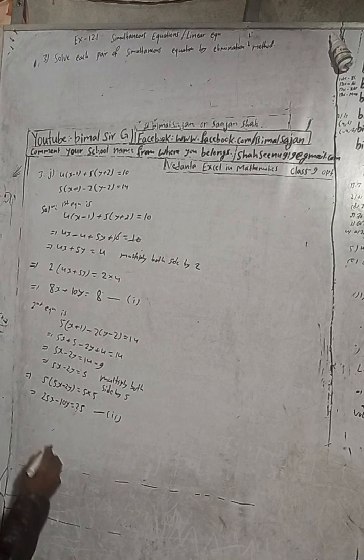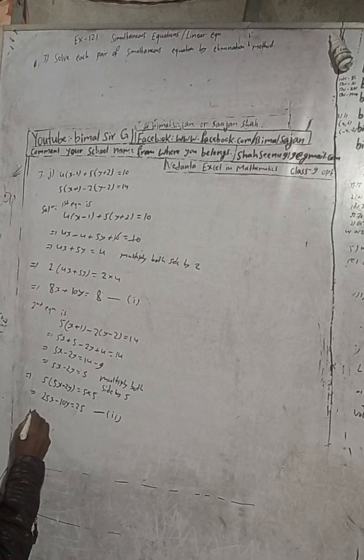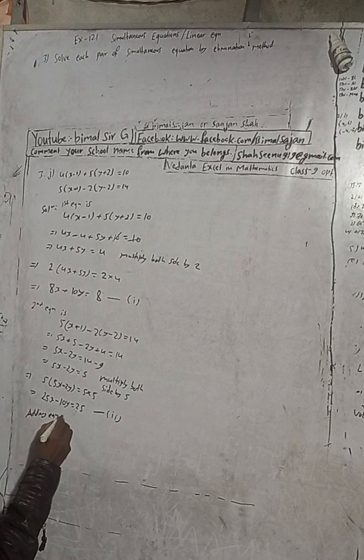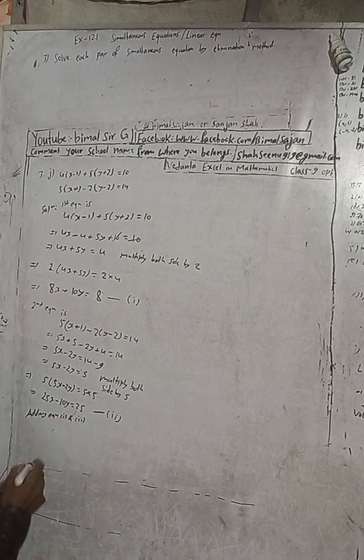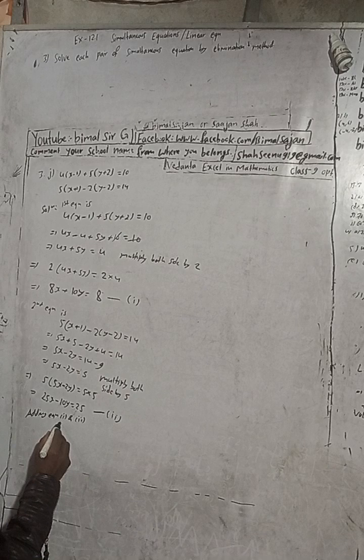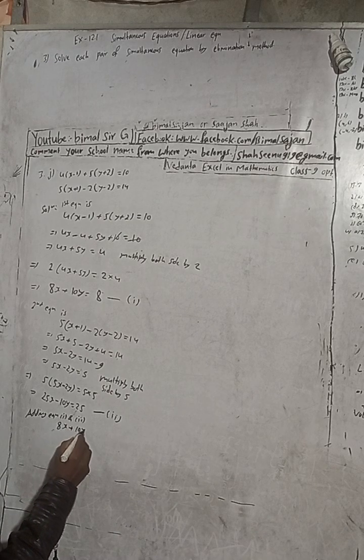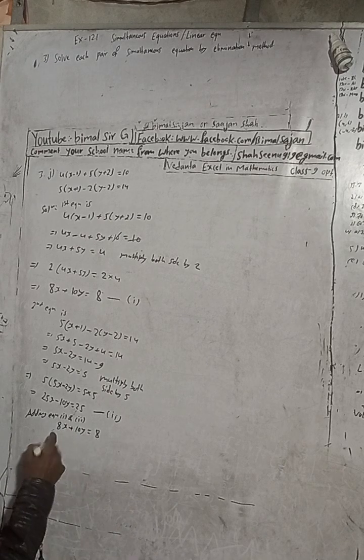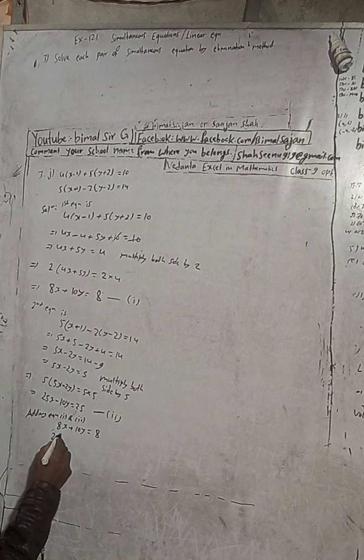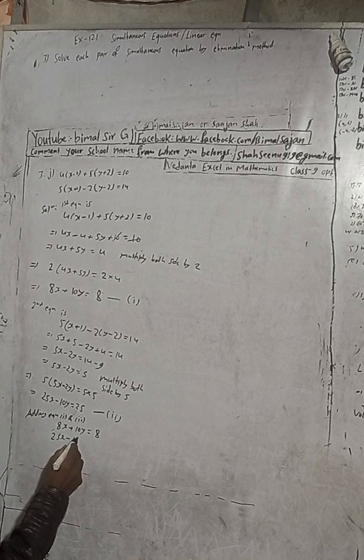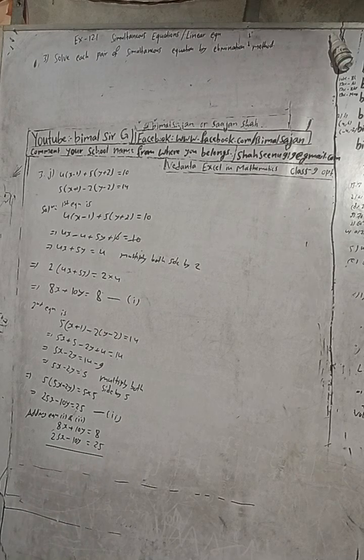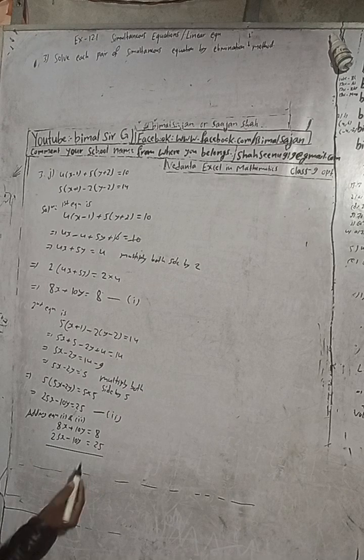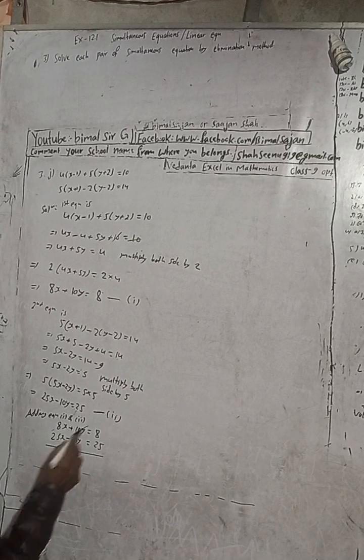Adding equation 1 and 2. So here equation 1 is here: 8x + 10y = 8, and this is here: 25x - 10y = 25. Here you can see, this is adding, means no need to change sign. Plus 10y and this minus 10y cancel. This is 25 + 8.